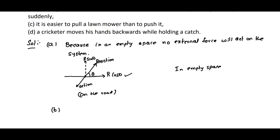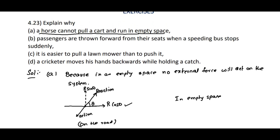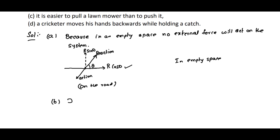Coming to (b): passengers are thrown forward from their seats when a speeding bus stops suddenly. This is due to inertia of motion. Due to inertia of motion, the upper part of the body tends to remain in motion even when the bus stops.